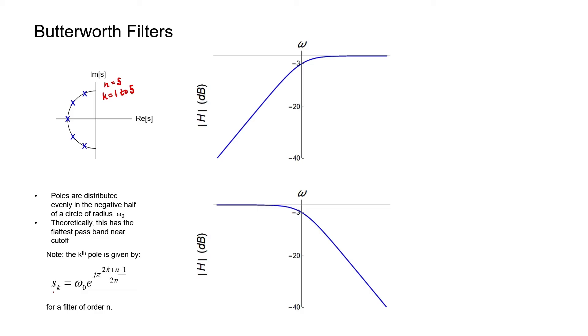Butterworth filters have an important property: they have the flattest possible passband near the corner frequency of the filter. If it were not a Butterworth filter — say, if it were a Chebyshev filter or an elliptic filter — there might be ripples in the passband. I'm showing the transfer functions of two different types of filters: the filter at the top is a high-pass filter and the filter at the bottom is a low-pass filter. There are two important parameters when designing a Butterworth filter: the corner frequency and the roll-off. A one-pole filter has a 20 dB per decade roll-off, whereas a two-pole filter has a 40 dB per decade roll-off when far from the corner frequency.